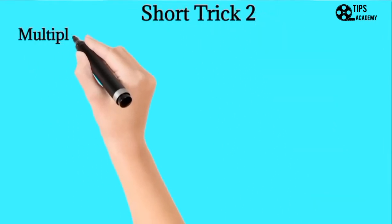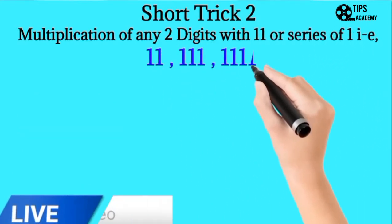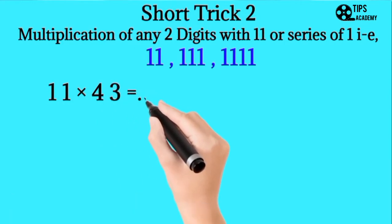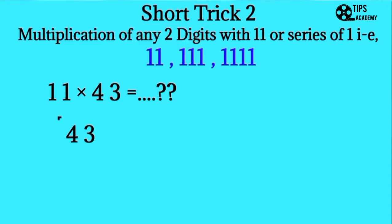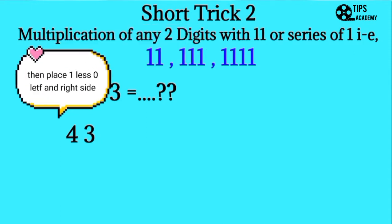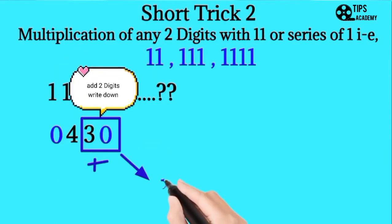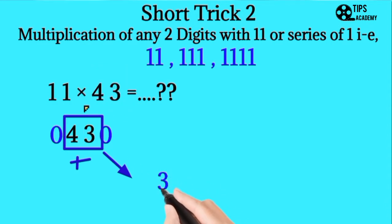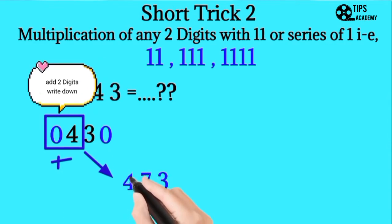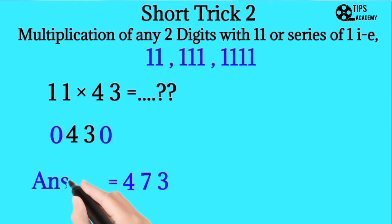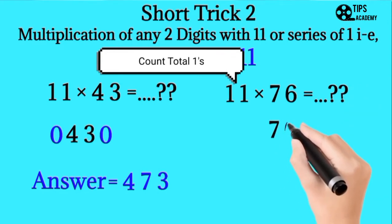Short trick number two: multiplication of any two digits with 11 or the series of ones, that is 11, 111. For example, we want to multiply 11 and 43. We will write down 43 and count the total number of ones, then place one less zero on the left side and right side. After that we will add 2 digits — 3 and 0 — and write down, then add the next two numbers and write down, and then similarly add the next two numbers. This will be the answer.